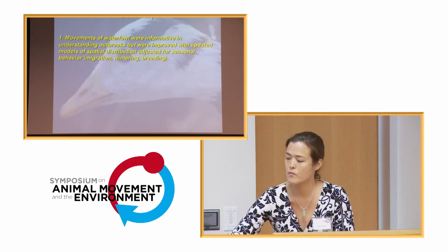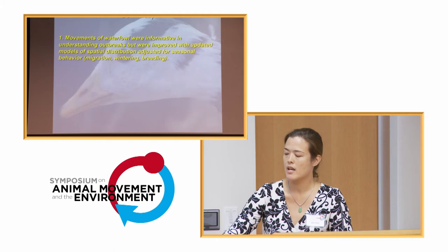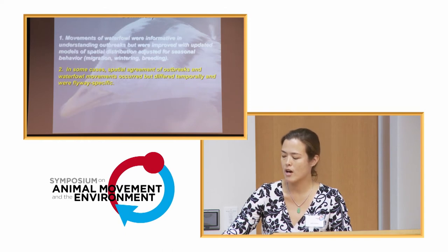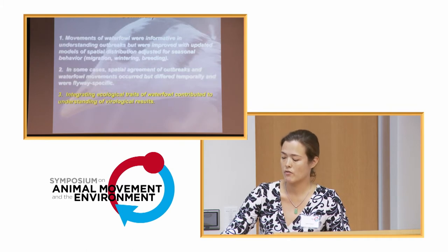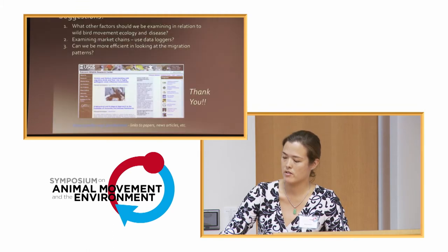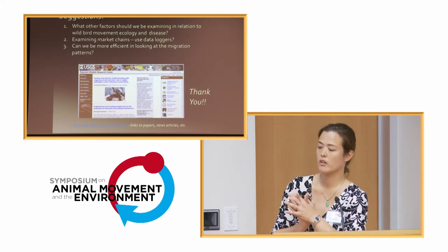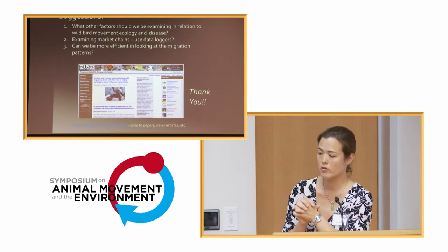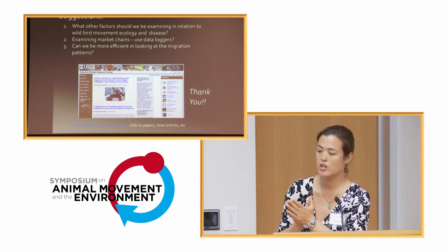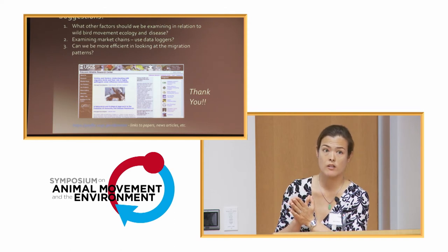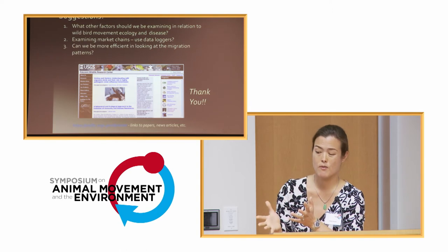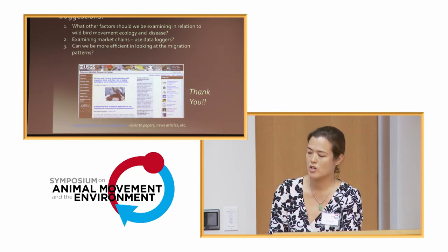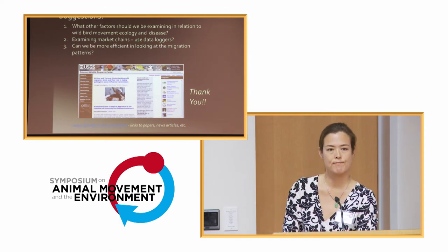Movements of waterfowl were informative in understanding these outbreaks, but they were improved as we improved our modeling and incorporated the time component. In some cases there was spatial agreement of outbreaks, but it differed temporally and within different flyways. Understanding more about the ecological traits of the waterfowl really helped us understand the processes in our modeling. For suggestions: we would welcome input on other factors we should examine in relation to wild bird movement ecology and disease. We're really interested in understanding more about market chains - one idea is to put data loggers on poultry and follow them through the market system. And can we be more efficient about looking at the migration patterns of the wild birds we're studying?